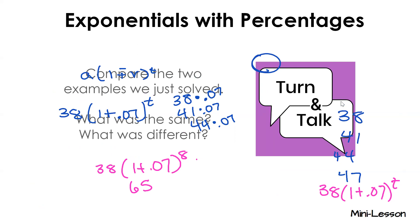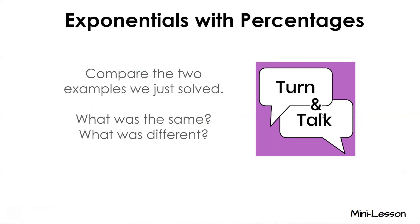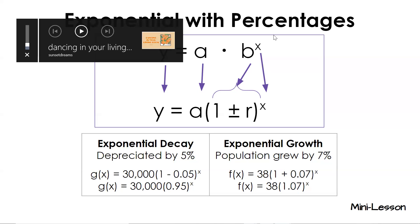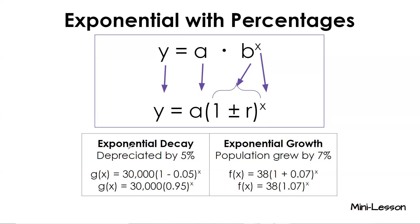Take a moment to summarize what we just went through with those two problems — what was the same, what was different? We're talking about exponential growth and decay in population contexts. The two words I need you to really focus on: 'depreciated' means we're going down, so that's always going to be your (1 minus). If I say a population grew, that's going to be the plus. Notice how it's written as plus-or-minus because you could have a depreciation or a growth.